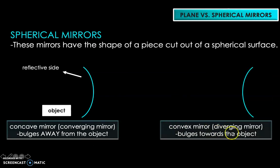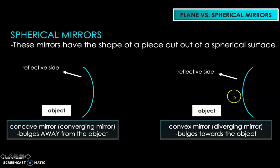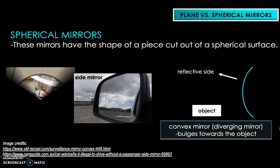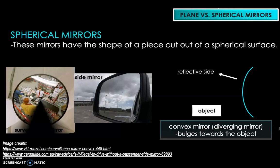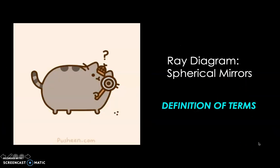Now we have the convex mirror, or the diverging mirror, which bulges towards the object — the opposite of concave mirrors. The reflective side of the convex mirror faces away, and the bump faces the object. Examples of convex mirrors are the surveillance mirrors you see in department stores and car side mirrors.